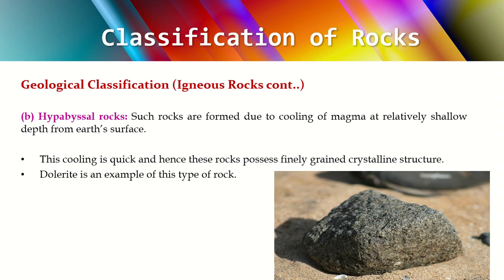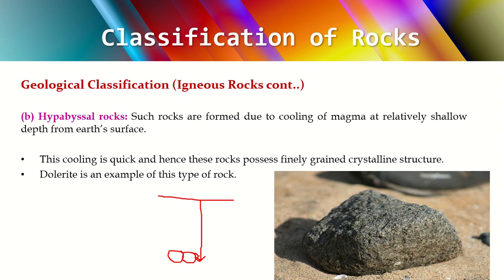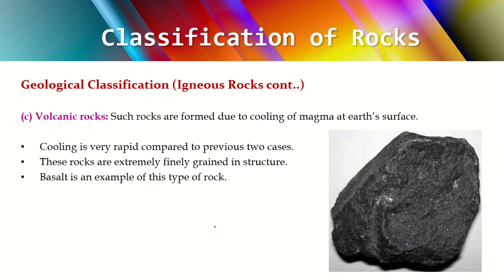Hyperbasal rocks are also formed by the cooling of magma, but at a relatively shallow depth from the earth's surface. As we go deeper into the earth's surface from the crust level, temperature keeps increasing, so cooling at shallower depths is actually faster. These rocks possess a fine-grained crystalline structure due to this quicker cooling. The best example of a hyperbasal igneous rock is dolerite, as shown in the diagram.